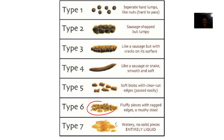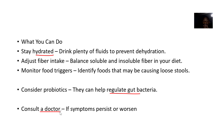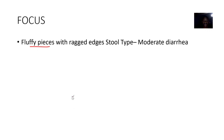So what do you do if you have Type 6 stool? Stay hydrated, since you are losing a lot of water. Adjust fiber intake — balance soluble and insoluble fiber in your diet to maintain stool consistency. Monitor food triggers to identify foods causing this. Consider probiotics to regulate gut bacteria. Consult a doctor if symptoms persist or worsen.